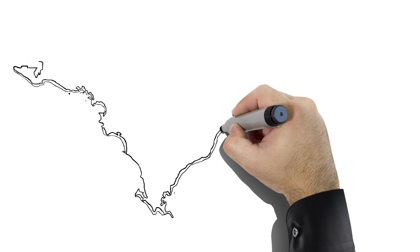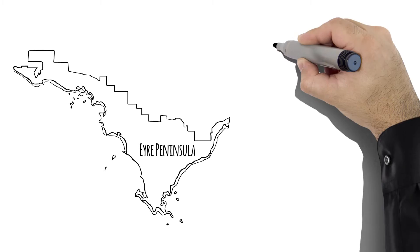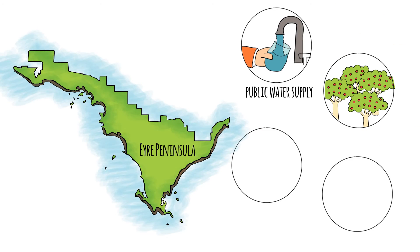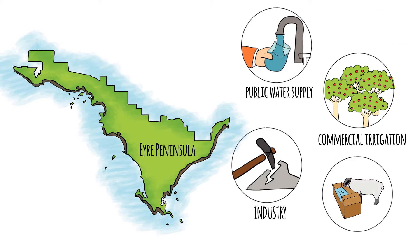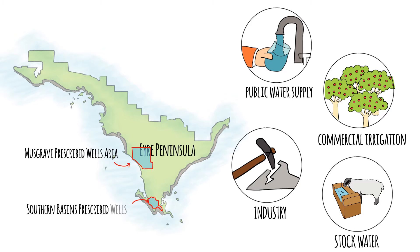The fresh water that is found in these aquifers is vital for the security of Eyre Peninsula's water supply and our industry and communities. It is from these aquifers that we source the water for our public water supply and other activities such as irrigation.